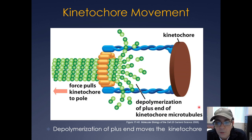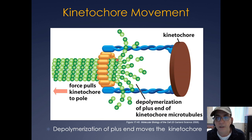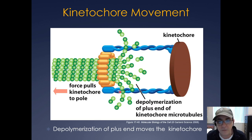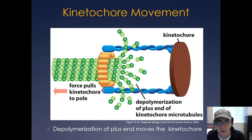At the metaphase-to-anaphase transition, sister chromatids are released from one another and the microtubules simply depolymerize — there are no motor proteins involved. Through dynamic instability and catastrophe events, the kinetochore just slides down the microtubule toward the attached centrosome. It is this depolymerization that generates all the pulling force; no motor proteins are involved in this process.